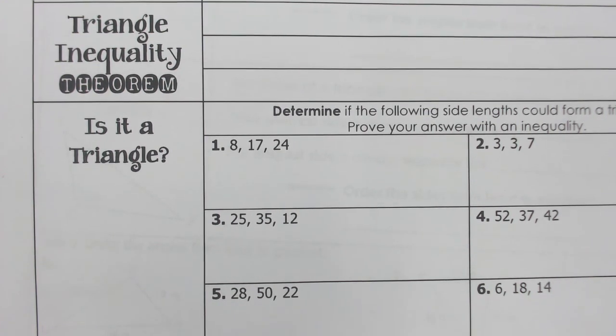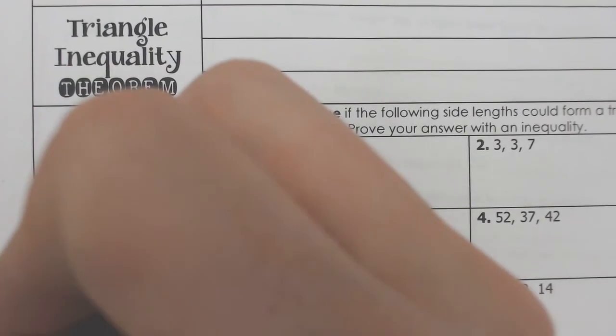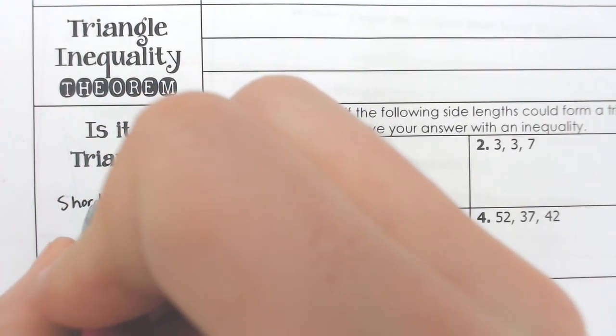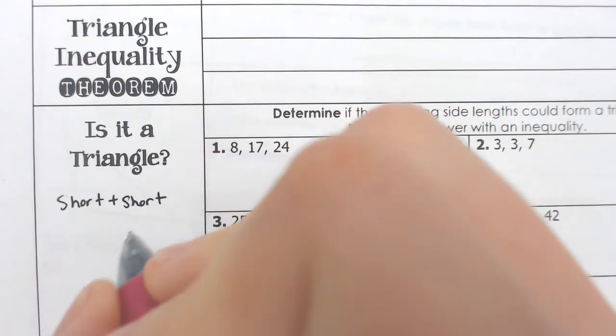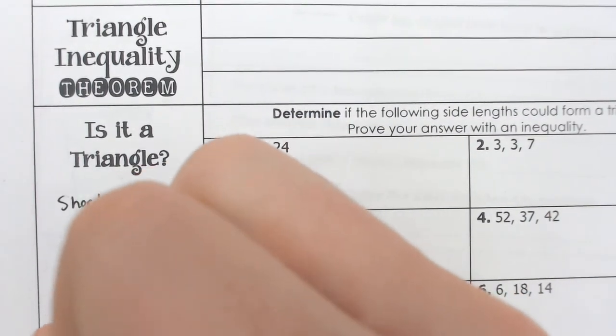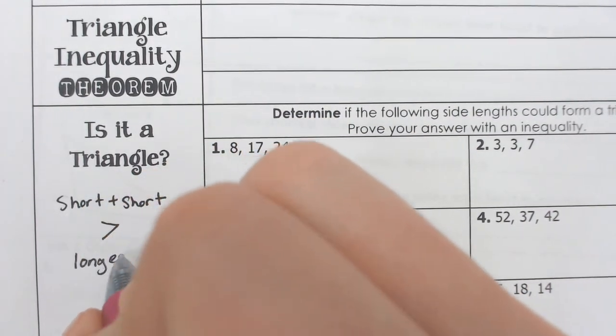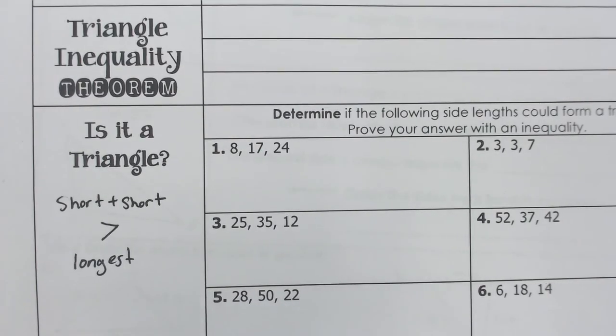So if you put the short side and the other short side together, they have to be greater than the longest side. And that is whatever the longest side happens to be.